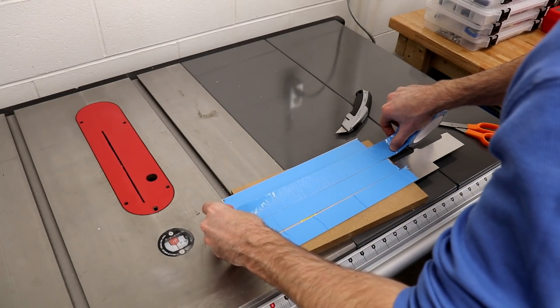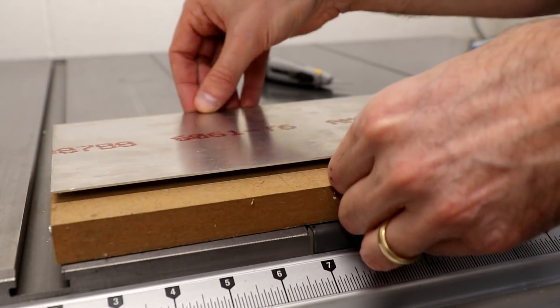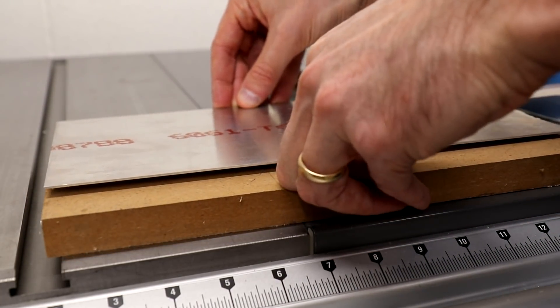The face plates will be milled on the CNC mill and it starts with stock that is attached to a piece of MDF with double-sided tape.